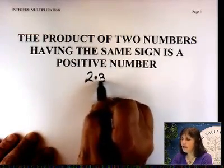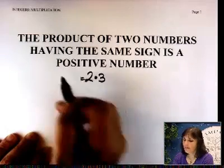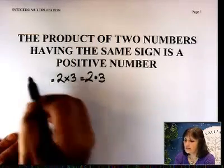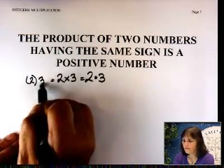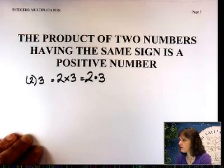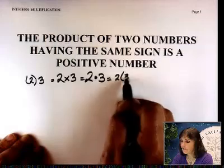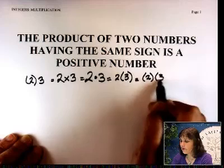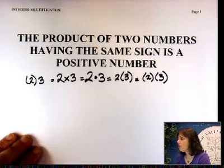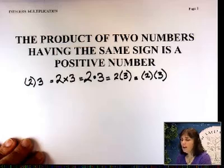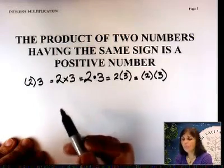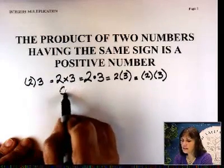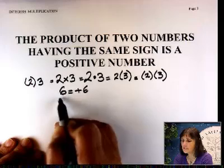2 times 3. I can write it with a dot, with a cross, I can put parentheses around 2, or parentheses around 3, or parentheses around both. Depending upon what book you're using, you're going to see all these notations. 2 times 3 — they are both positive, so 2 times 3 is simply 6. I don't have to put a plus 6; it's just simply 6.